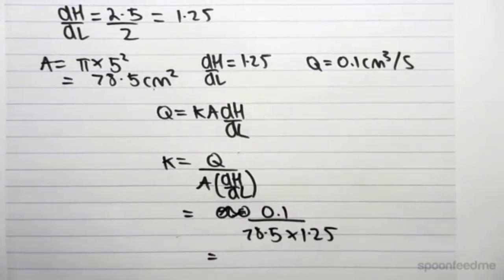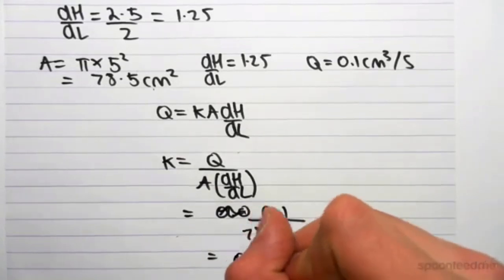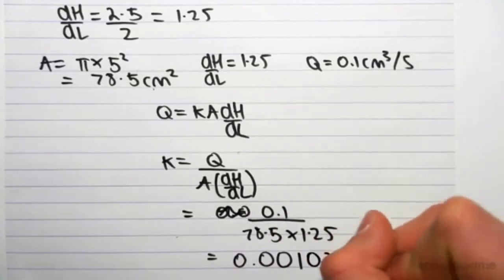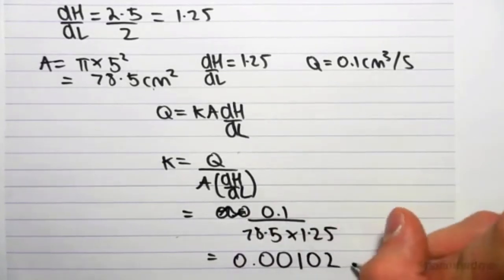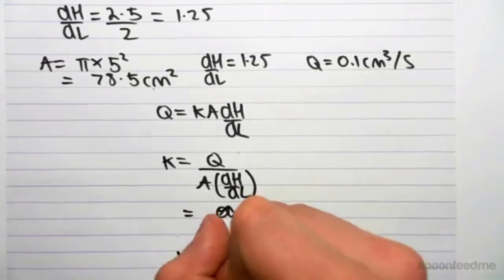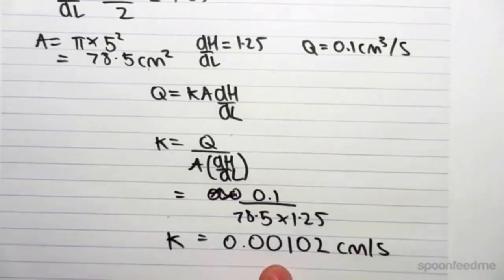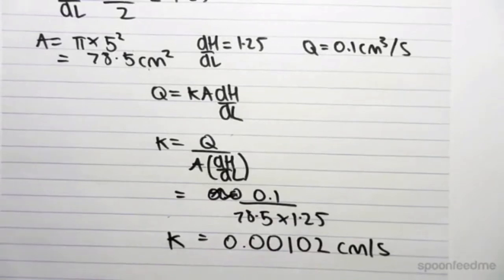So if we work this out, 0.1 divides 78.5 by 1.25, we get 0.00102. So our K, our coefficient of proportionality, is 0.0102 centimeters per second.